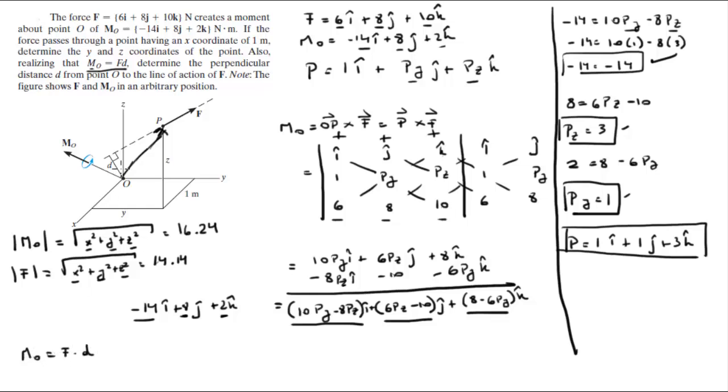So they're telling you that the moment is equal to f times that distance d. Therefore, the moment is given at 16.24, we calculate it at 16.24. The force f, we calculate it to be 14.14, and this is what we're trying to find. So you solve for d by dividing both sides by 14.14, and you get that d is equal to 1.15 meters, approximately.